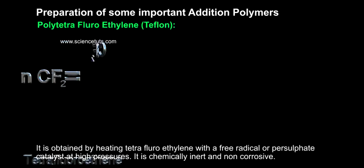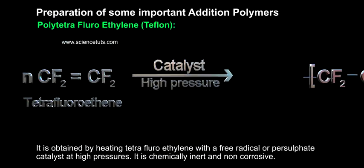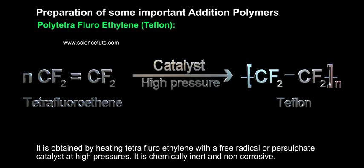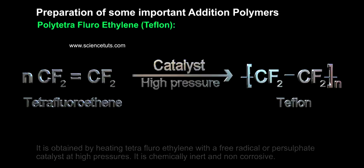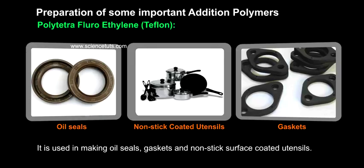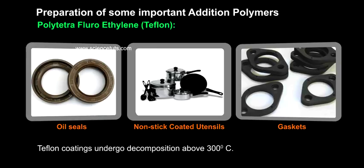Polytetrafluoroethylene (Teflon): It is obtained by heating tetrafluoroethylene with a free radical or persulfate catalyst at high pressures. It is chemically inert and non-corrosive. It is used in making oil seals, gaskets, and non-stick surface coated utensils. Teflon coatings undergo decomposition above 300°C.